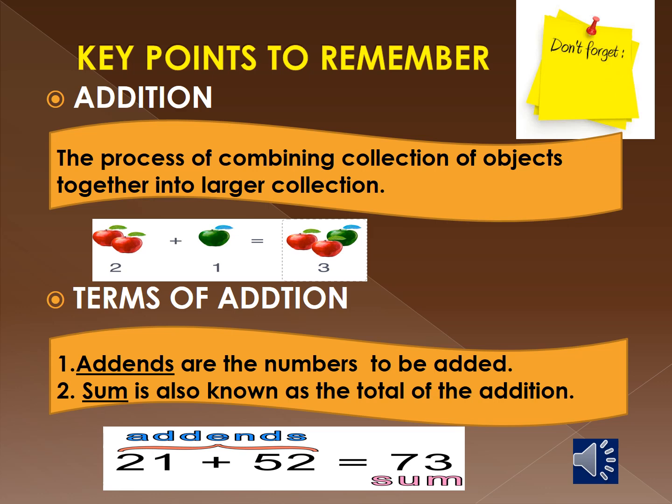Terms of addition. For example, when you add two numbers, 21 and 52, you get the answer 73. The numbers 21 and 52 are called addends — the numbers that we add are called addends, and the answer or the total is called the sum.